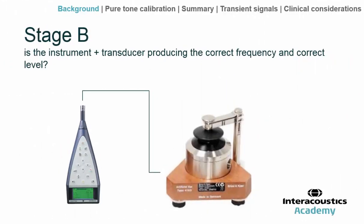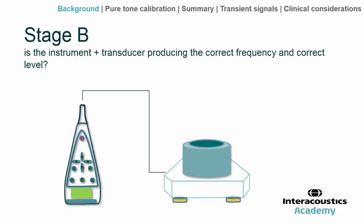For Stage B, with this particular instrument and transducer pairing, the question is: is it producing the correct stimulus frequency and the correct stimulus level? To help answer these questions, we use specialist instrumentation — a sound level meter and a coupler, a device that connects the transducer to the sound level meter to measure its output — essentially a cavity with a microphone to transduce the acoustical input back into an electrical signal.